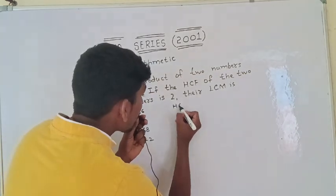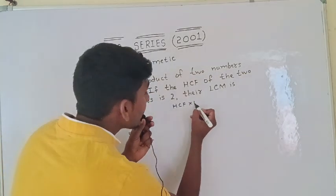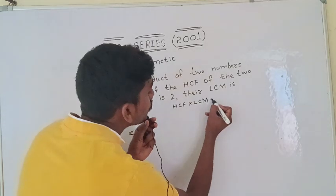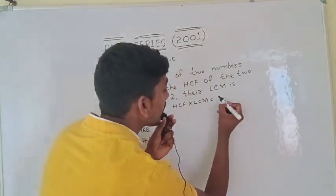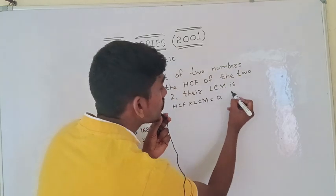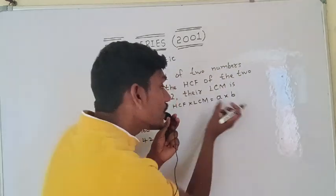The product of HCF into LCM is equal to product of two numbers. The two numbers are A and B.